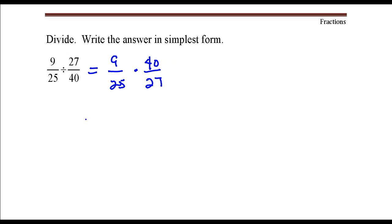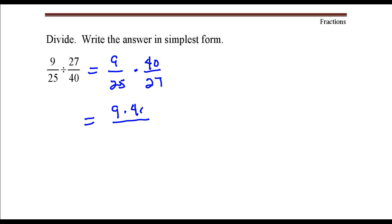To multiply two fractions together, you just need to multiply numerator times numerator all over denominator times denominator. So in the numerator we have nine times forty, and in the denominator we have twenty-five times twenty-seven.